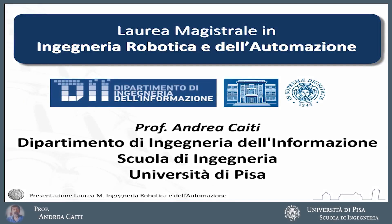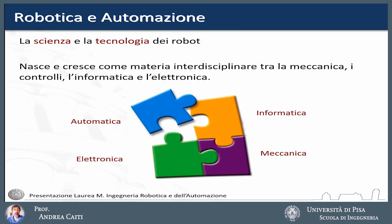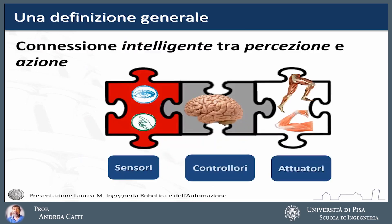What is the Master's degree in Robotics and Automation Engineering? Well, it is about robots — the science and technology of robots. Robotics is a discipline that was born in the second half of the last century, the 1900s, at the intersection of informatics, mechanics, electronics and automatic controls. A robotic system can be defined very generally as an automation system — the intelligent connection between perception and action.